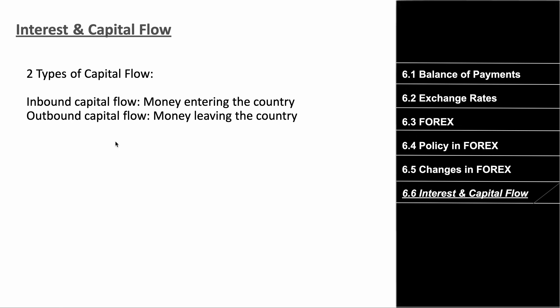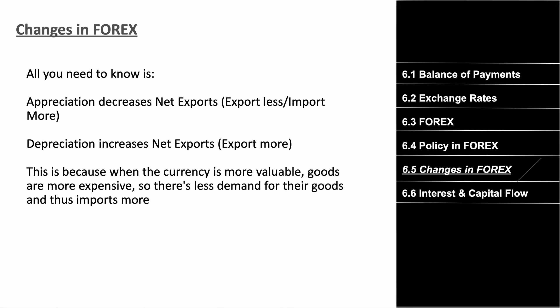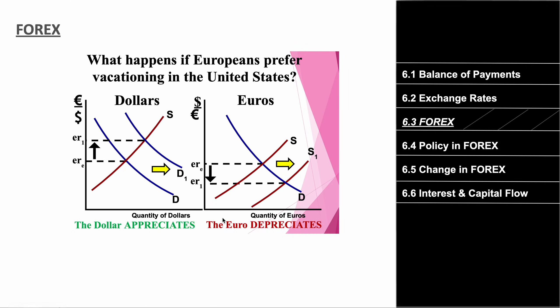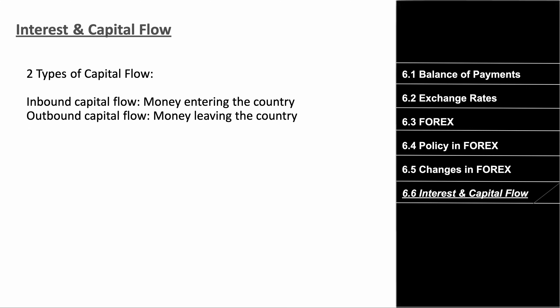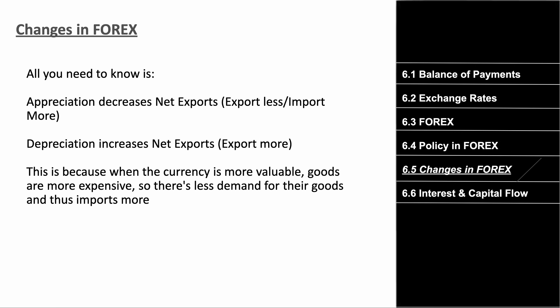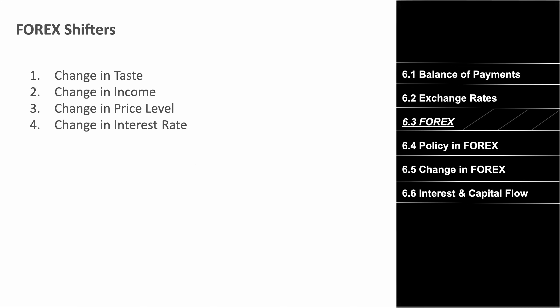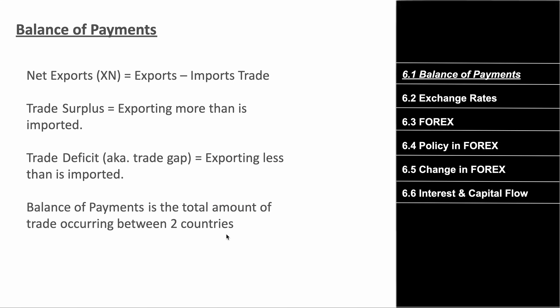The final topic is capital flow. There are two main types: inbound capital flow, which is money entering the country, and outbound capital flow, which is money leaving the country. This unit can get complicated, but on the AP Macro exam it's tested at a surface level. Understanding all of this will get you about 90% of the Unit 6 questions right, but to get a 5, you should practice changing forex graphs and understanding how it all connects to the real world.